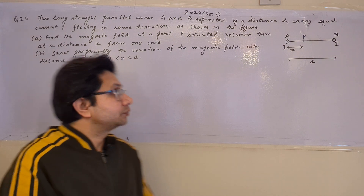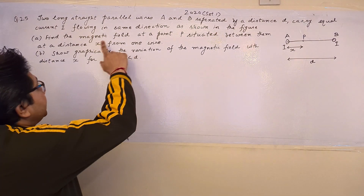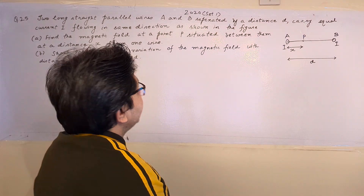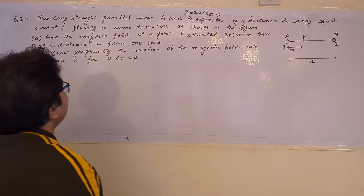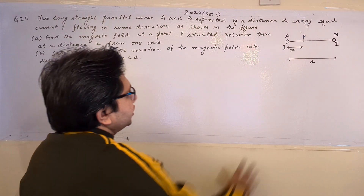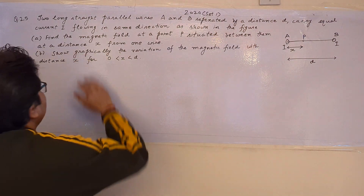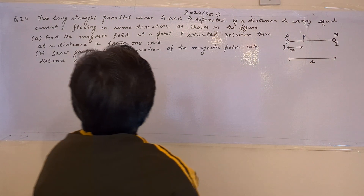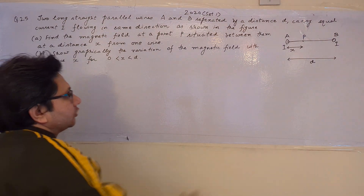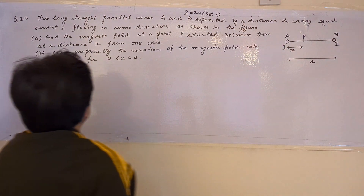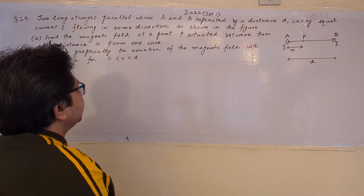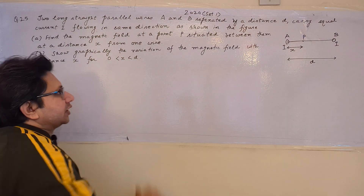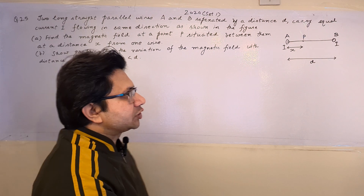Hello students. The question is: two long straight parallel wires A and B separated by a distance d carry equal current i flowing in the same direction as shown in the figure. Part A: find the magnetic field at a point P situated between them at a distance x from one wire. Part B: show graphically the variation of the magnetic field with distance x for x lying between 0 and d.